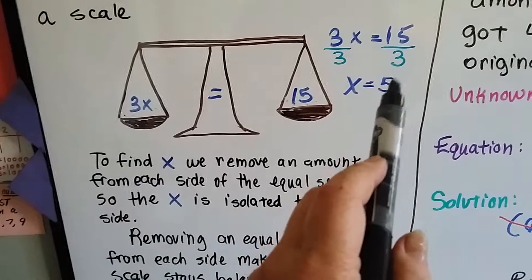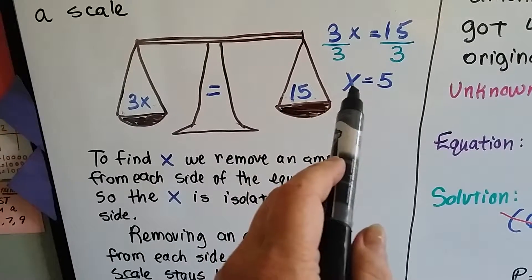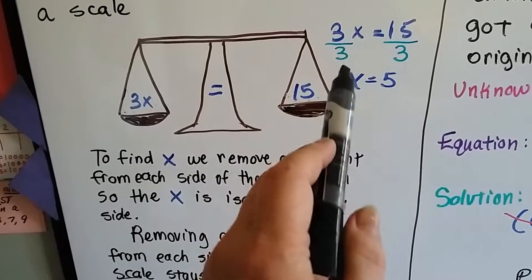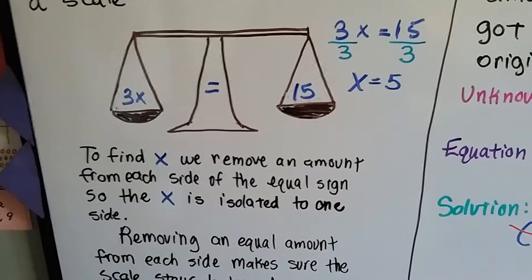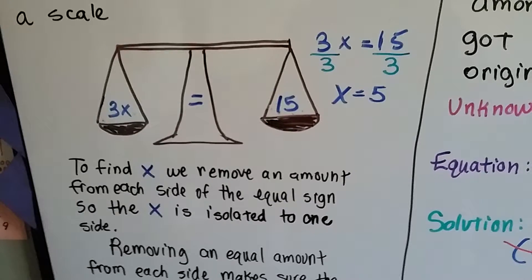That means that 15 divided by 3 is 5, and that makes x by itself because 3 over 3 equals 1. Remember? When a fraction has the same numerator and denominator, then it's just a 1.